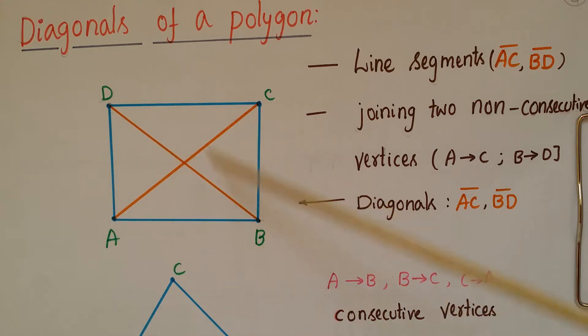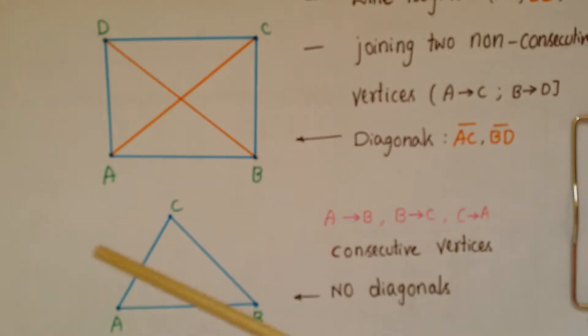So AC and BD are diagonals of this polygon. Suppose you take a triangle. Here AB are two consecutive vertices, AC are two consecutive vertices, and BC are two consecutive vertices. There are no two non-consecutive vertices, so a triangle has no diagonals.